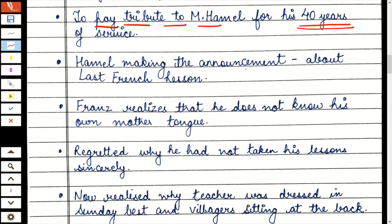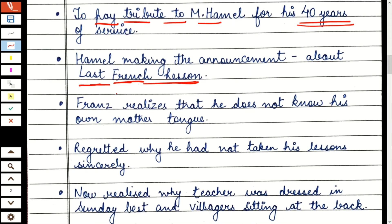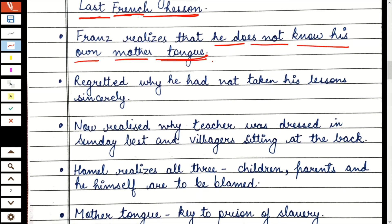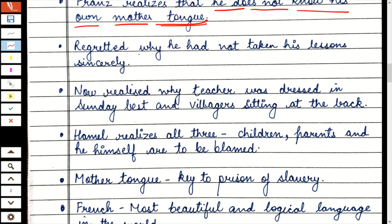Hamill making the announcement about his last French lesson — यह भी याद रखना है, उस दिन उनका last French lesson था, जो Mr. Hamill ने announce किया था। अब जब उसको पता चलता है कि यह last French lesson है, तो Franz क्या realize करता है: that he does not know his own mother tongue — very important. Franz को realization होता है कि उसको अपनी खुद की mother tongue ही अच्छे से नहीं आती, उसने कभी भी efforts नहीं डाले language सीखने के लिए, कभी class में ध्यान नहीं दिया, और उसे regret होता है कि मैंने अपने lessons को sincerely क्यों नहीं लिया।